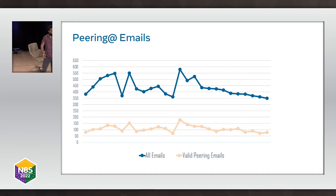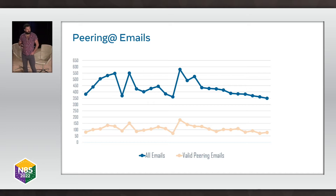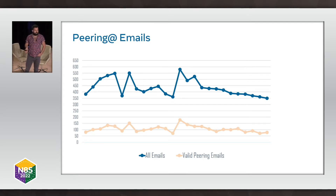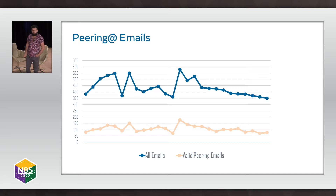Looking at the trend of requests, it's not one-off. You can see here two lines. The blue line shows total emails received month by month — this is a couple of years' worth of data. The other line shows the number of valid peering requests we need to handle. There are a few peaks and troughs — that could be holiday freezes, change freezes, or when we connect to a new IX and announce that. But the pattern is pretty consistent: about 100 to 150 valid requests per month.